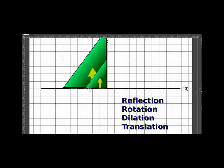We went from 1, 2, 3 wide to 1, 2, 3, 4, 5, 6 wide. We went from 1, 2, 3, 4 tall to 1, 2, 3, 4, 5, 6, 7, 8 tall. This is dilation.